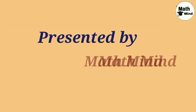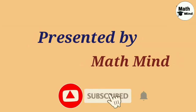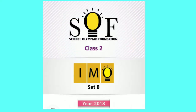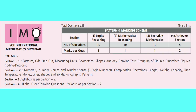Hello friends. I hope you like my videos. If you like my videos, please like and subscribe to my channel. This video covers the International Mathematics Olympiad (IMO) Class 2 question paper 2018-19, Set B. This is the question pattern, marking scheme and syllabus. Please take a screenshot.